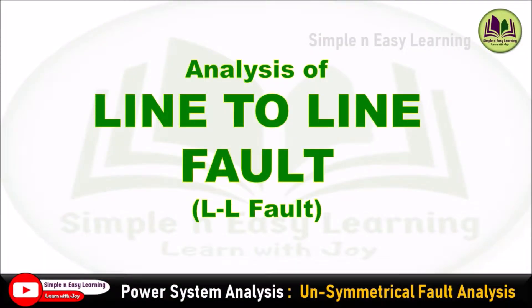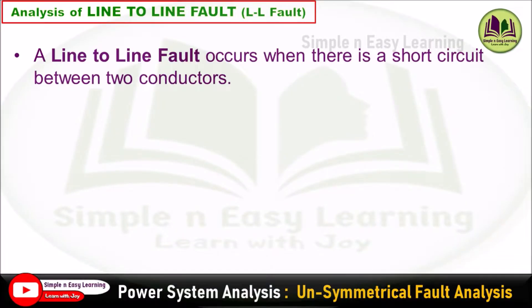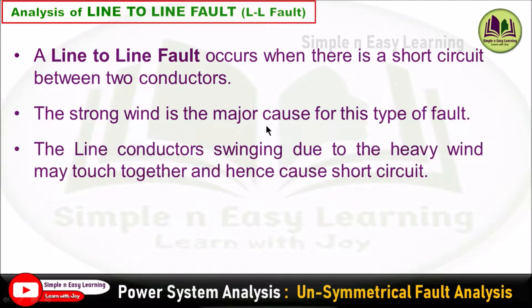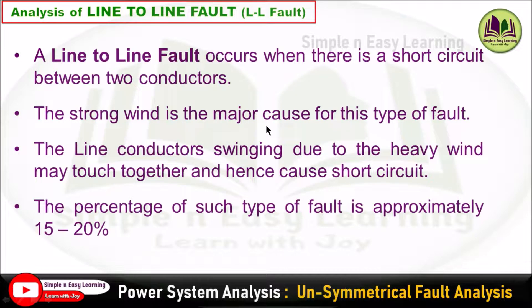Analysis of line-to-line fault or LL fault. A line-to-line fault occurs when there is a short circuit between two conductors or two transmission lines. Strong wind is the major cause for this type of fault, and the line conductors swinging due to heavy wind may touch each other and hence cause the short circuit. The percentage of such type of fault is approximately 15 to 20 percent.